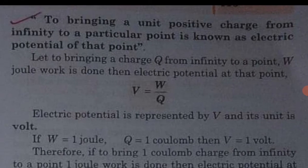Electric potential is defined as the work done to bring a unit positive charge from infinity to a particular point. The formula is V is equal to W upon Q. Electric potential is represented by capital V and its unit is volt (V-O-L-T).